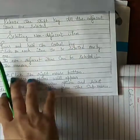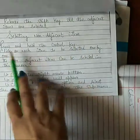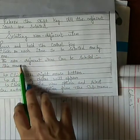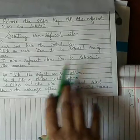Selecting non-adjacent items: Number four: Press and hold the control key. Number second: Click on each item to be selected one by one. The non-adjacent items can be selected in this manner.